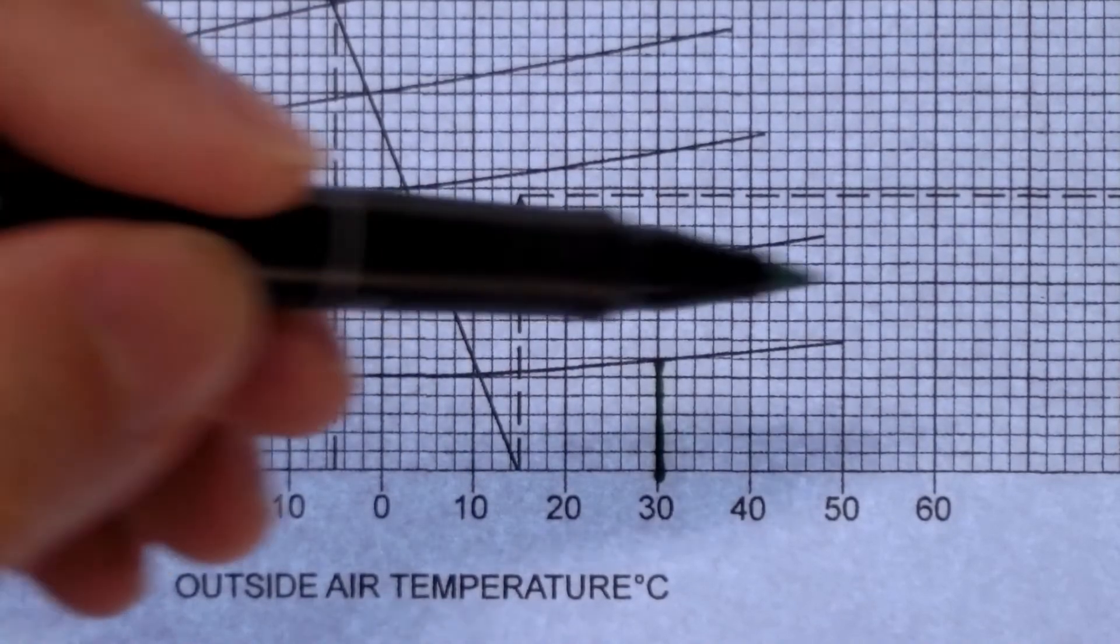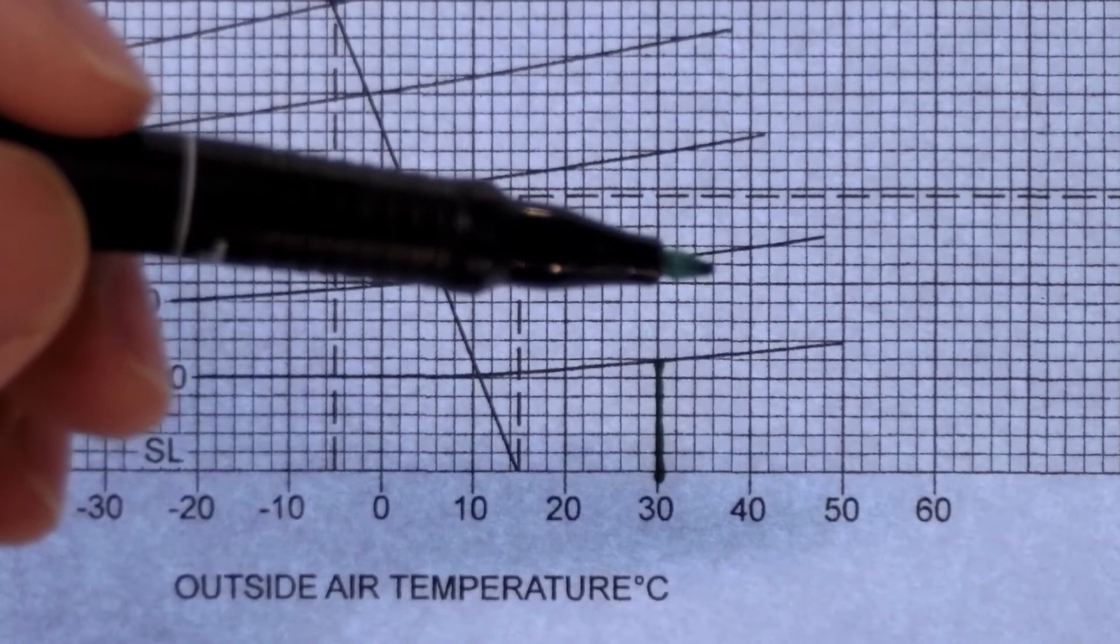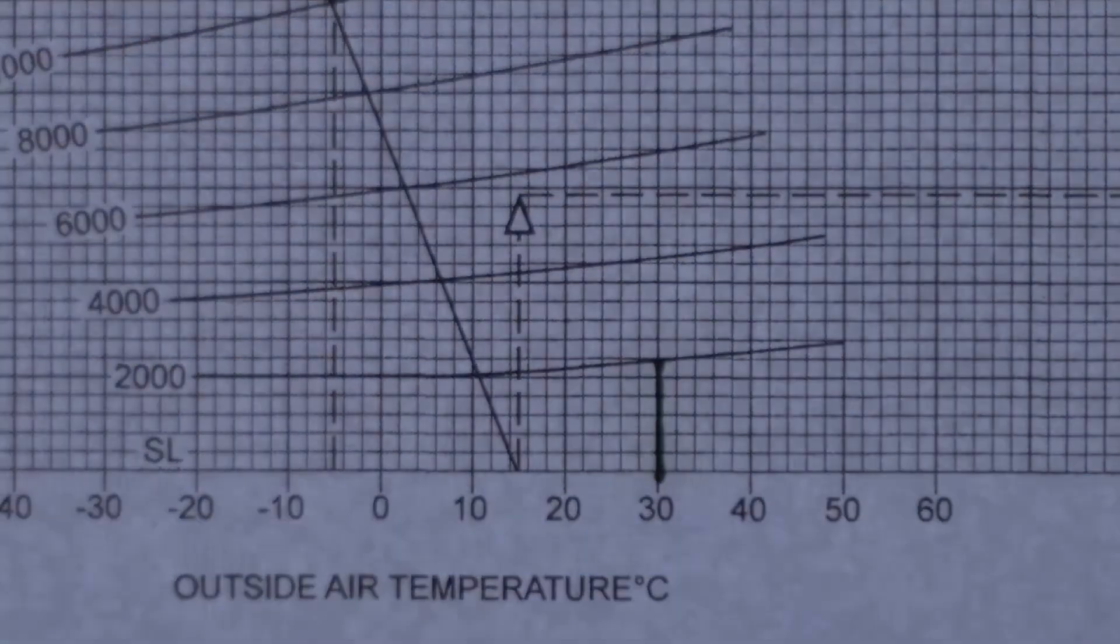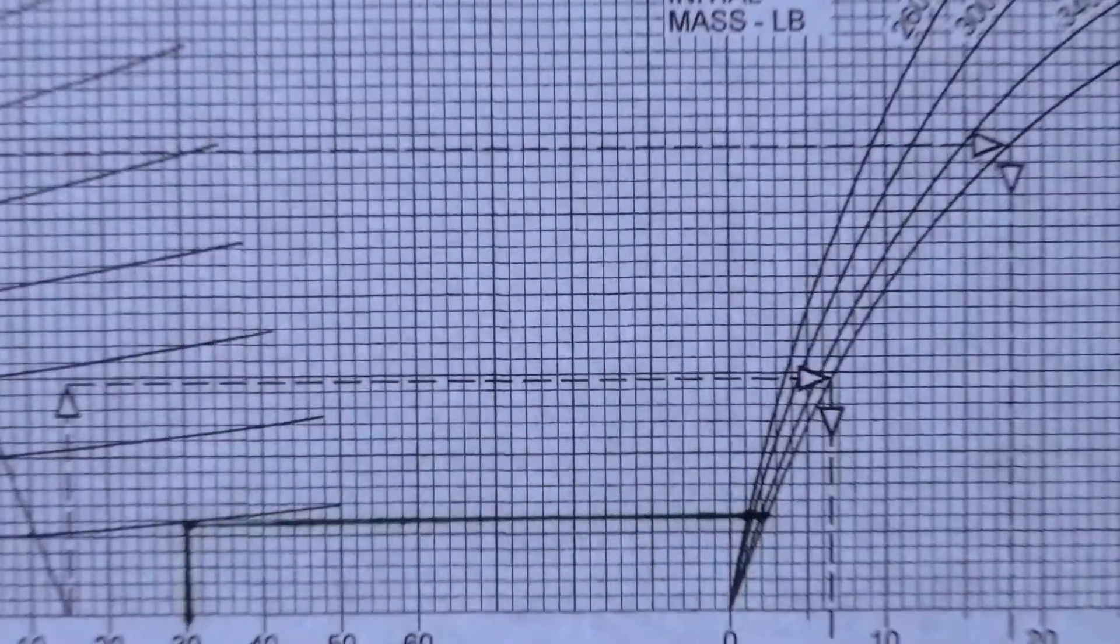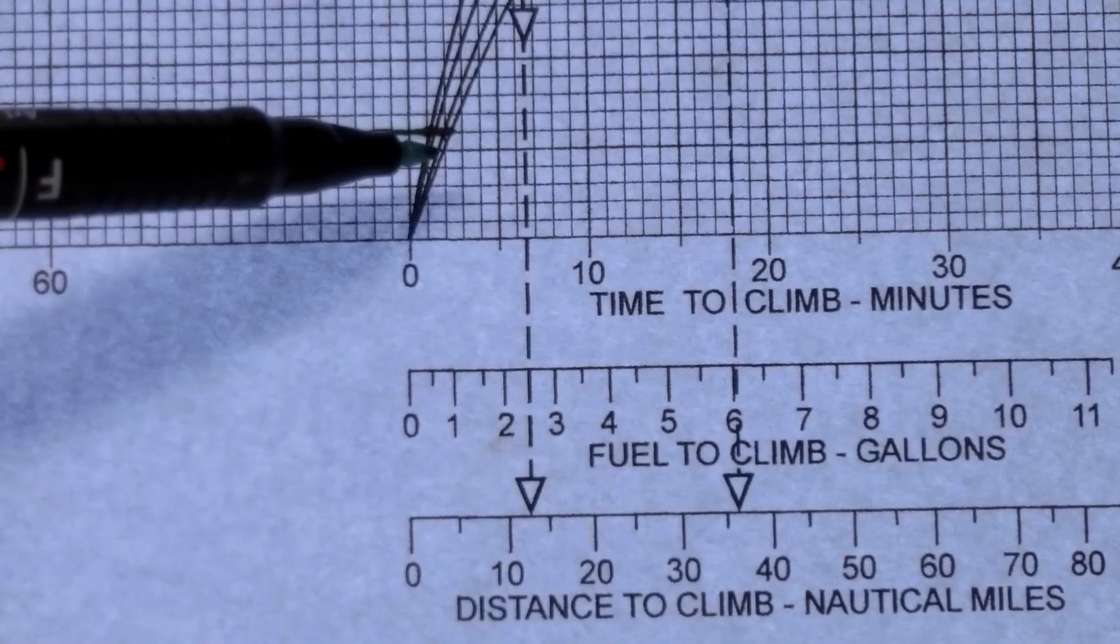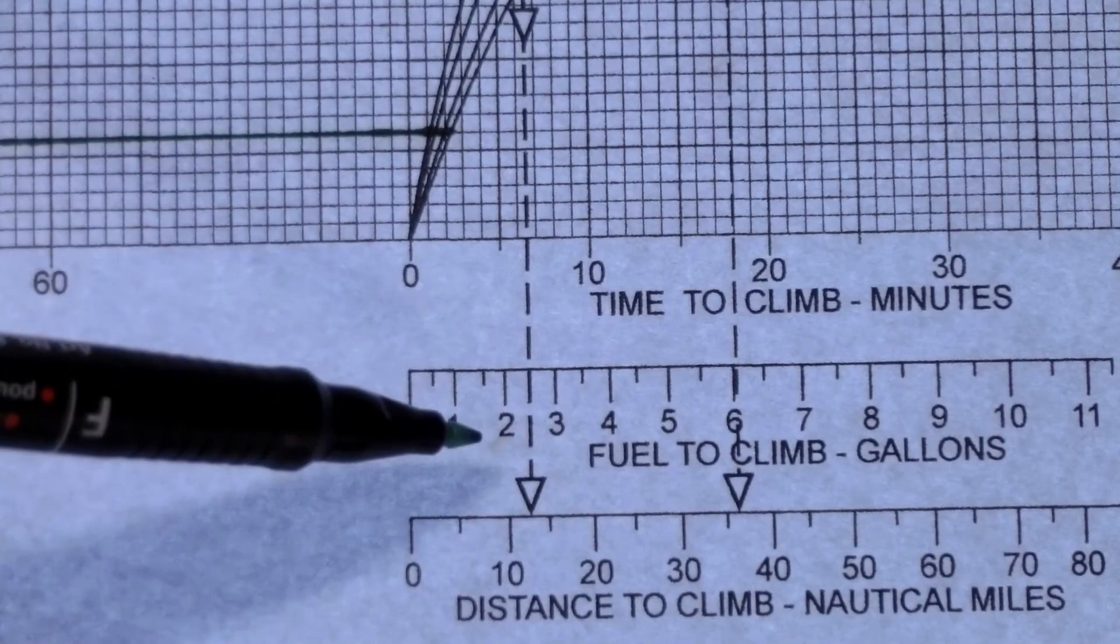Then I am going to go across the chart through the lines that represent initial mass. And then we will go down the chart to meet the scale for time, fuel and distance.